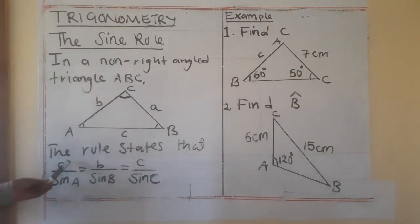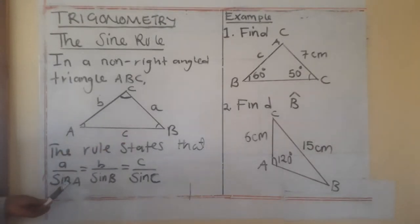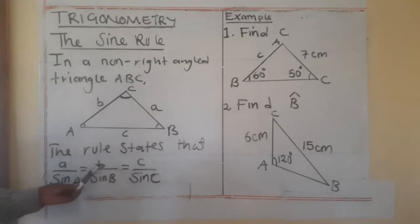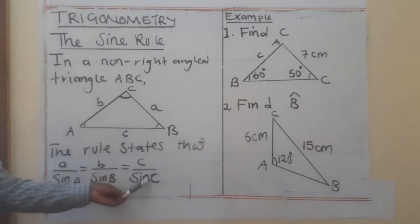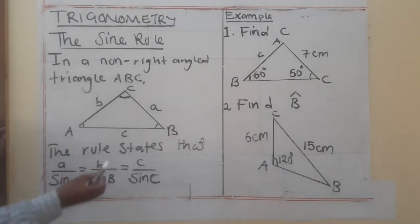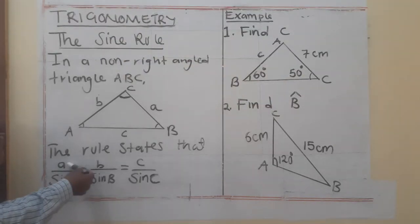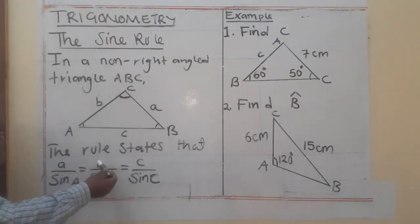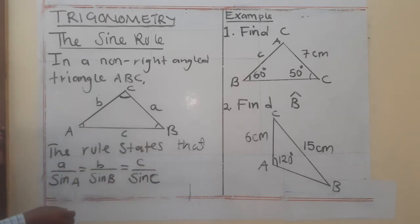The rule states that side a divided by sin A is equal to b divided by sin B, which is also equal to c divided by sin C. Alternatively, you can write it as sin A divided by a equals sin B divided by b equals sin C divided by c.